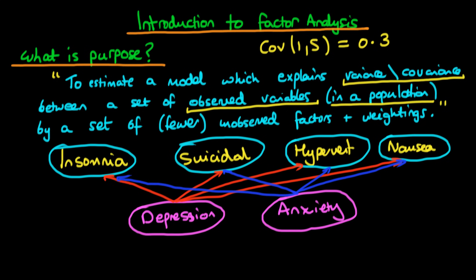Typically the weightings which these unobserved characteristics have on the observed characteristics are different. The weight of the first arrow — the amount to which depression causes insomnia — we might call omega 1-1, where the first index indicates it's the first unobserved factor weighting on the first observed factor. This first blue arrow we might call omega 2-1, where the two indicates we're dealing with the second unobserved factor weighting on the first observed factor. What we're trying to do is estimate these weights and these unobserved factors.